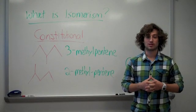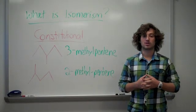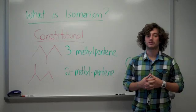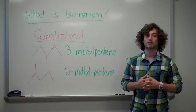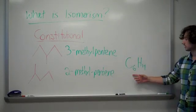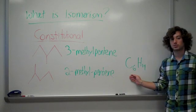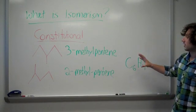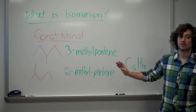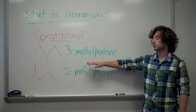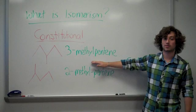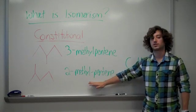Isomers are compounds that have the same molecular formula but will have different connectivity of the various atoms. For example, we have C6H14, and we have 3-methylpentane and 2-methylpentane. These two are considered constitutional isomers because they have the same molecular makeup but they have different connectivity of their atoms.